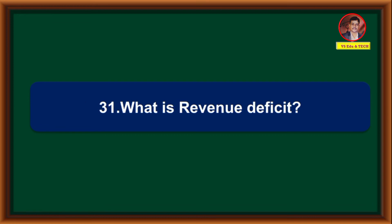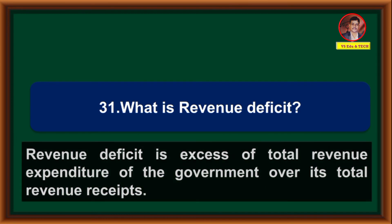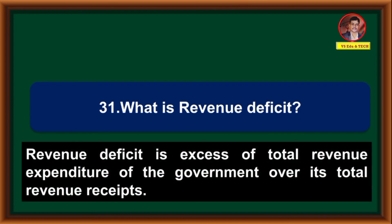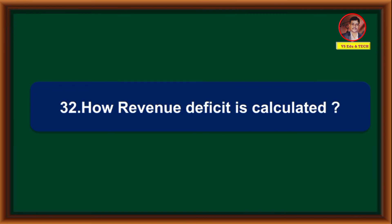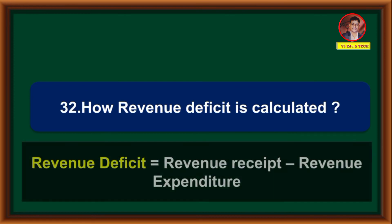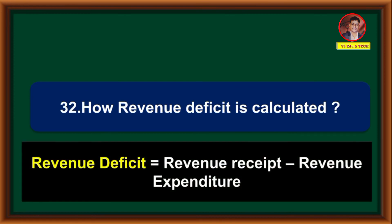What is revenue deficit? Revenue deficit is the excess of total revenue expenditure of the government over its total revenue receipts. How is revenue deficit calculated? Revenue deficit equals revenue receipts minus revenue expenditure.